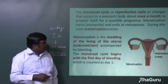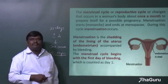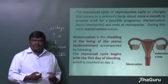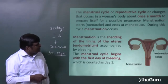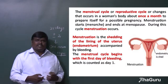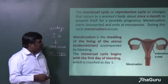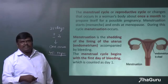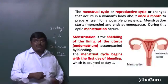Menstruation is the shedding of the inner lining of the uterus, called the endometrium. During the menstrual cycle, the endometrium sheds — the tissues get ruptured, causing bleeding that comes out through the cervix and vagina. That process is called menstruation. In the 28-day cycle, the first four to five days involve this shedding, and the menstrual cycle begins on the first day of bleeding.